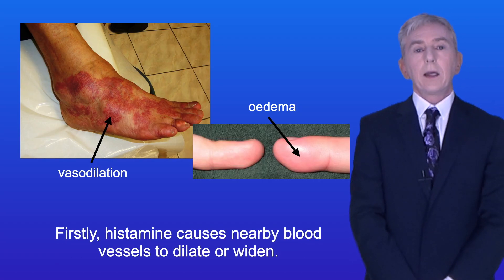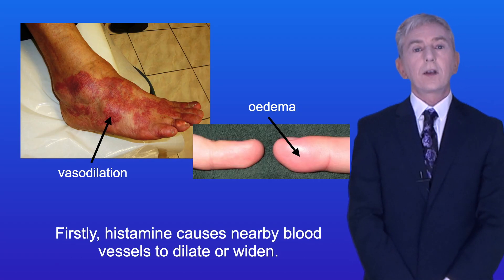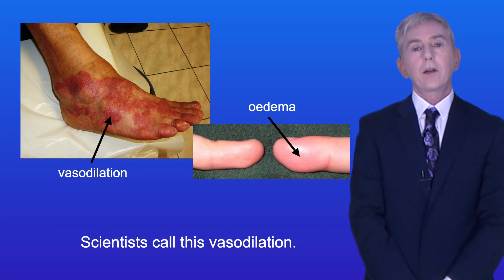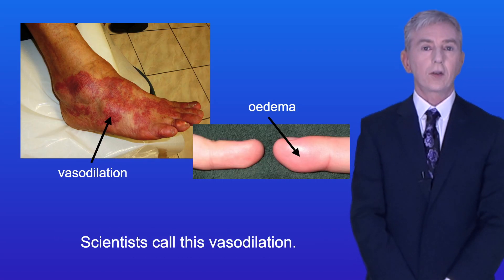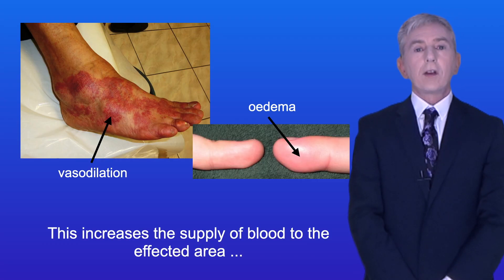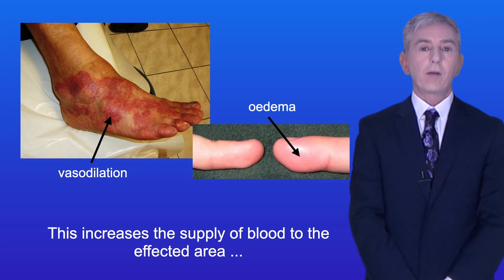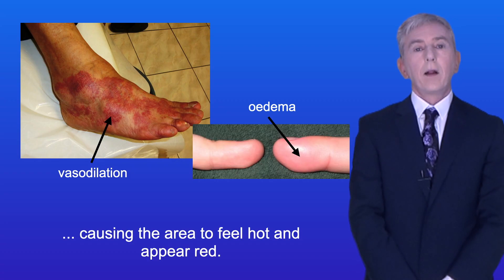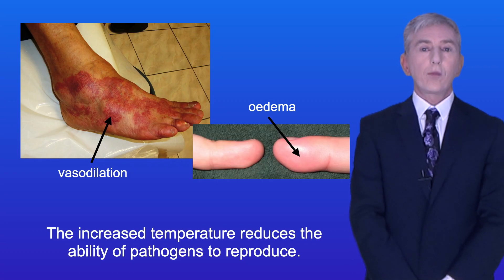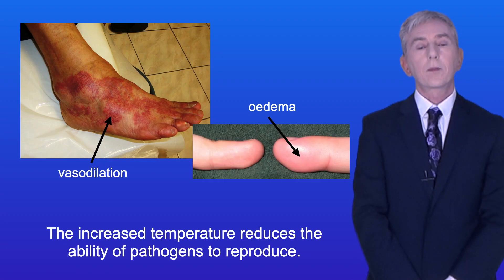Firstly, histamine causes nearby blood vessels to dilate or widen — scientists call this vasodilation. This increases the supply of blood to the affected area, causing the area to feel hot and appear red. The increased temperature reduces the ability of pathogens to reproduce.